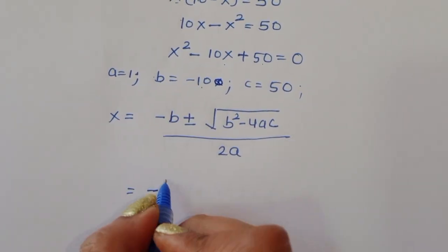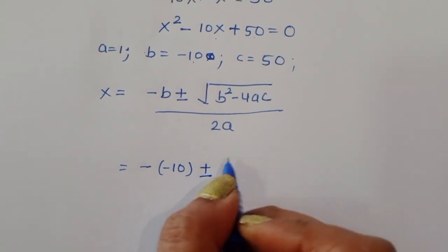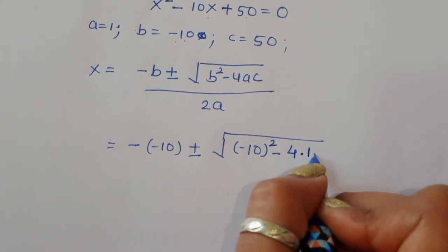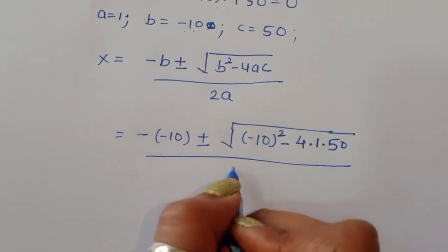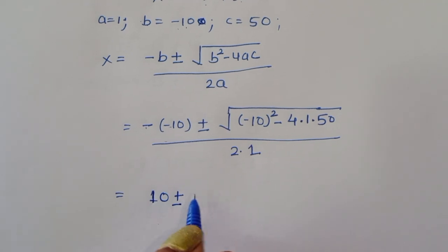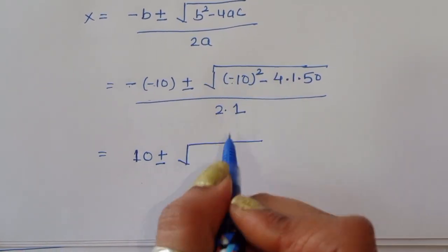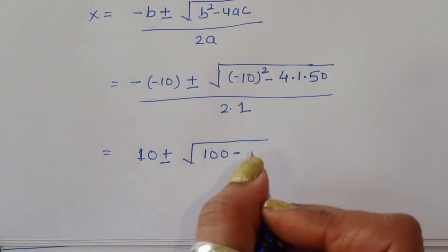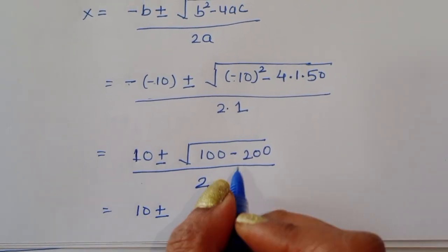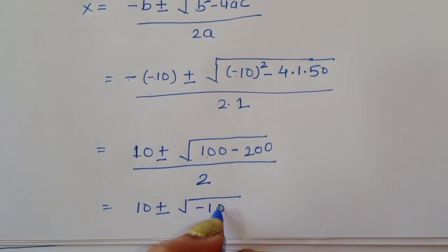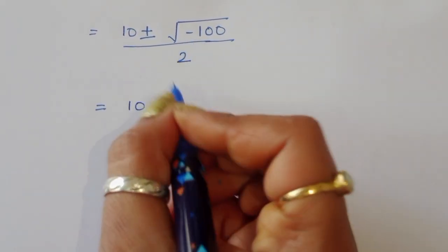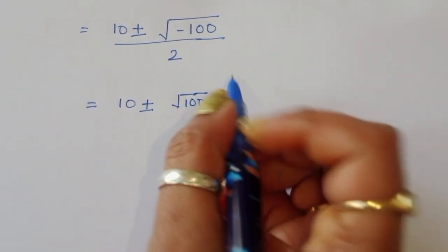Substituting: x equals minus (minus 10) plus or minus square root of ((minus 10) squared minus 4 times 1 times 50), divided by 2 times 1. This gives 10 plus or minus square root of (100 minus 200) divided by 2, which is 10 plus or minus square root of (minus 100) divided by 2.